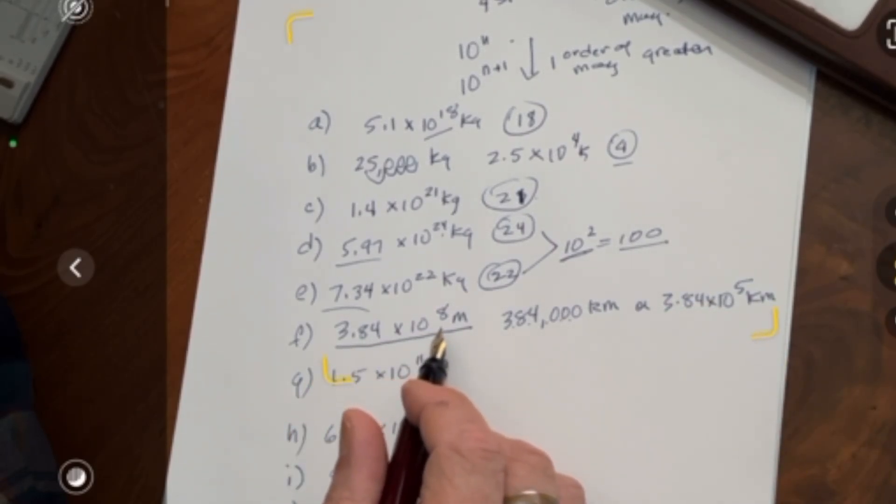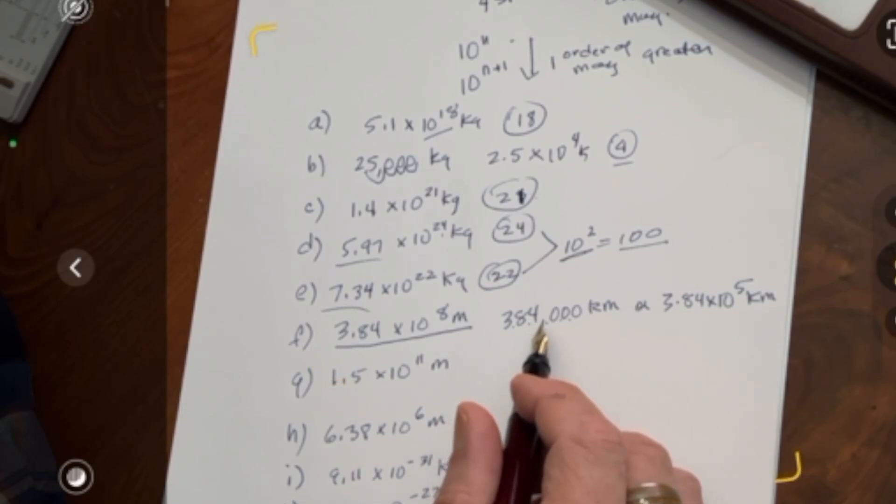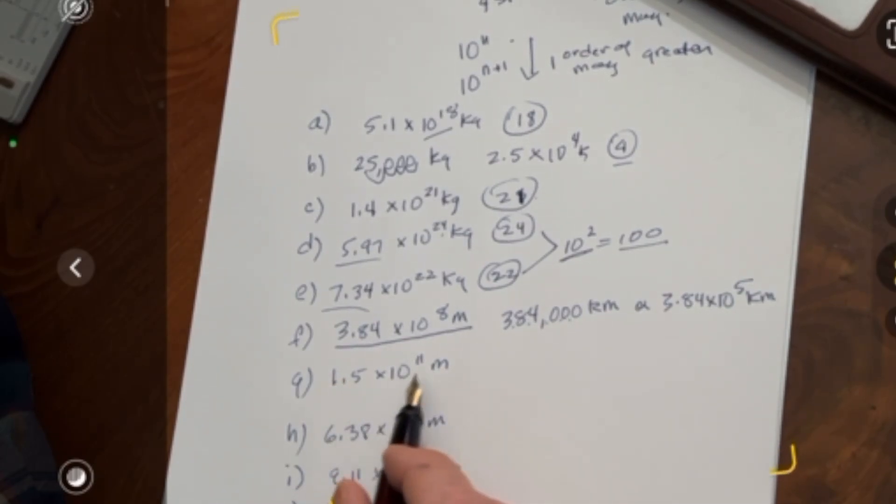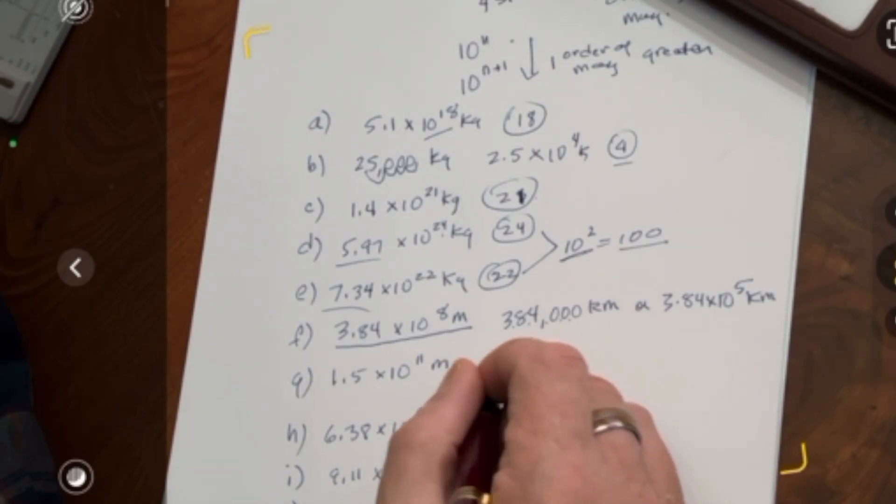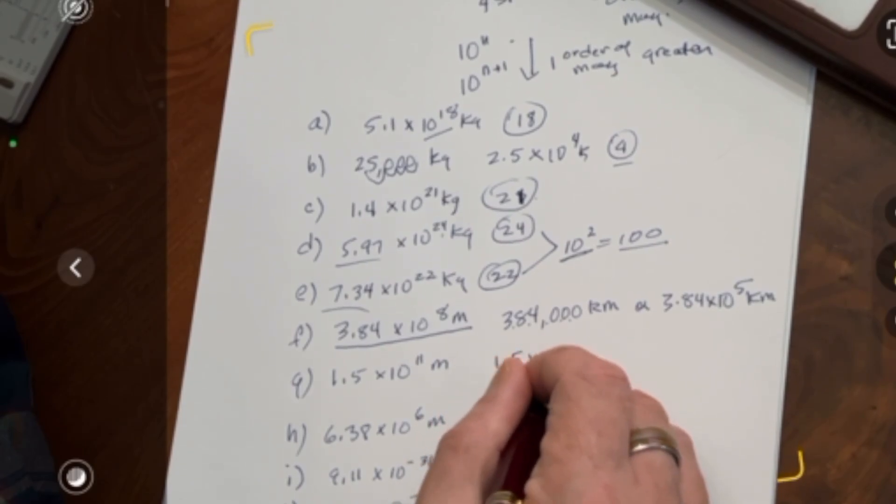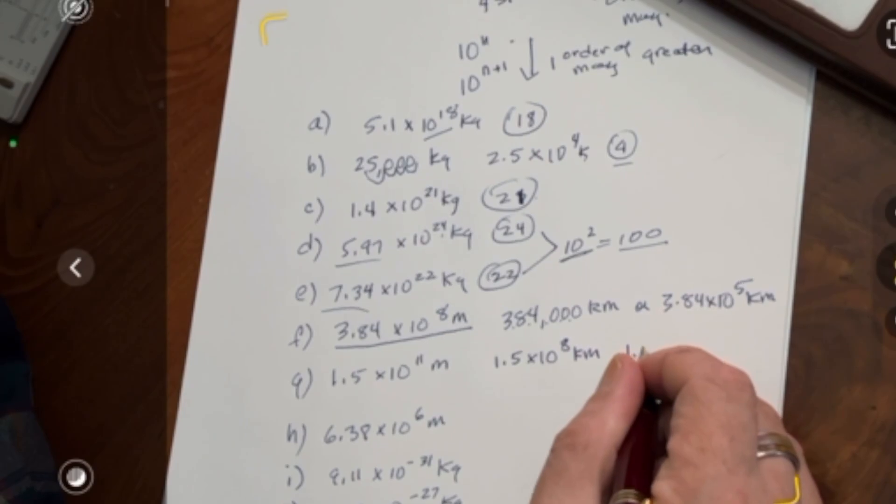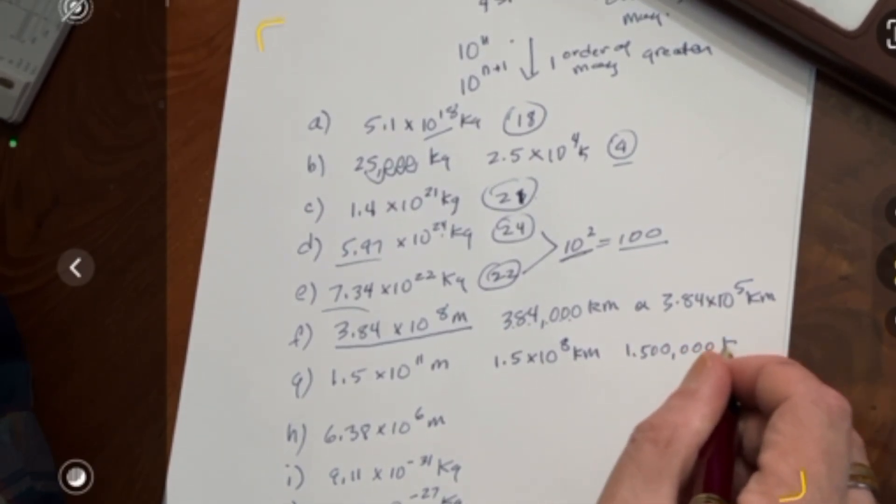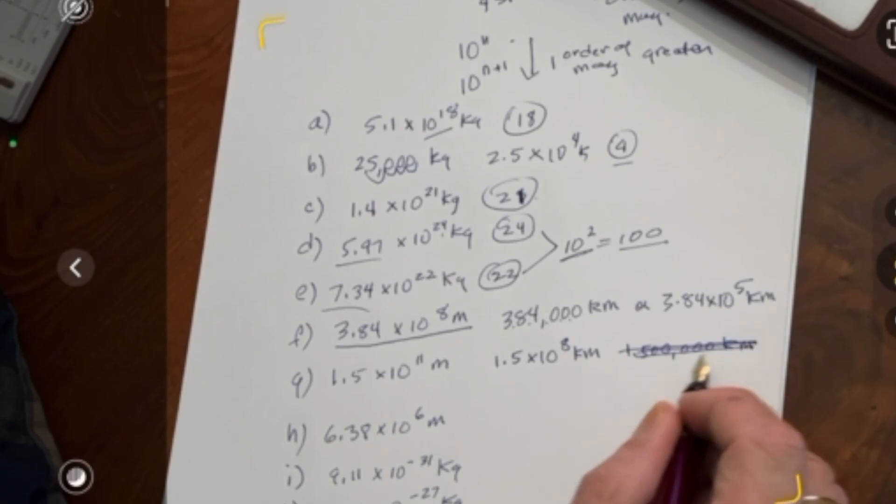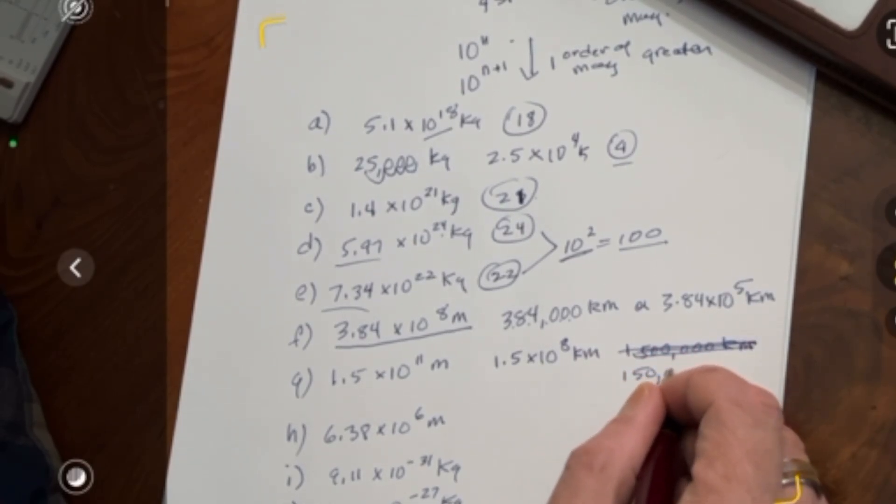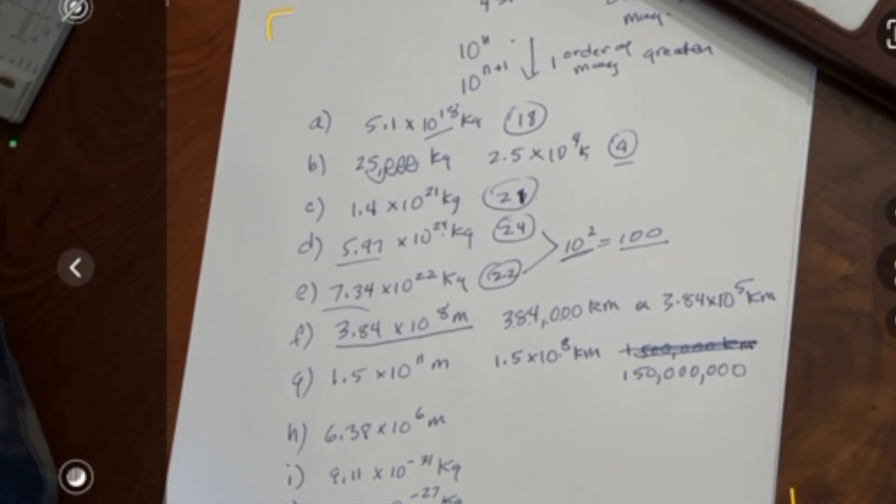The distance from the Earth to the Moon, 3.84 times 10 to the 8th meters. That works out to 384,000 kilometers. The distance from the Earth to the Sun is 1.5 times 10 to the 11th meters. What's that work out to in kilometers? We would remove 3 from this 11, and we would get 1.5 times 10 to the 8th kilometers. That's 150 million kilometers.